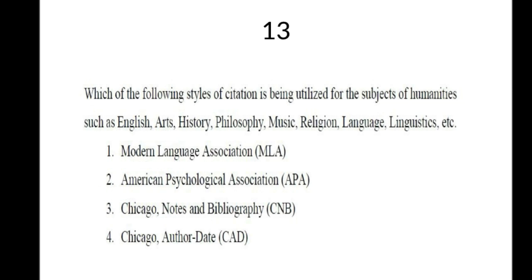Question 13: Which citation style is used for humanities subjects such as English, arts, history, philosophy, religion, and language? Options: MLS state, Modern Language Association (MLA) style, APA style (American Psychological Association), Chicago notes bibliography style, Chicago author-date style. The correct answer is Modern Language Association (MLA) style.